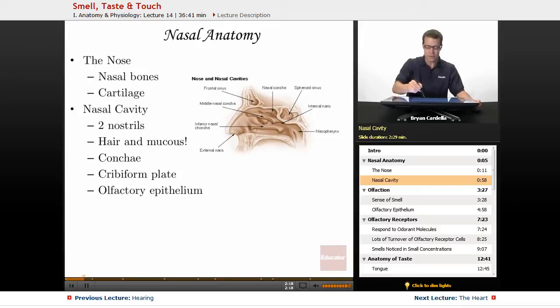The conchae are those weaving little caverns named after the fact that they are kind of spirally and twisty and turny like a conch shell. But the nasal conchae is formed mostly by that ethmoid bone that we discussed in the skeletal lessons. And on top of those weaving caverns of the ethmoid bone, you're going to have those mucus membranes producing the nasal mucus.